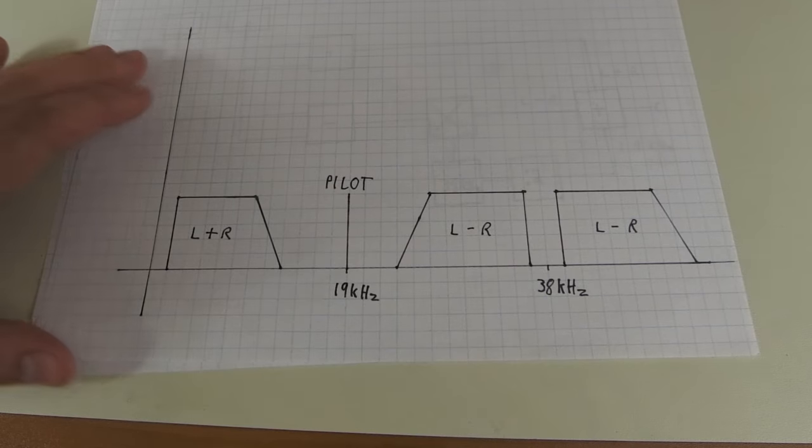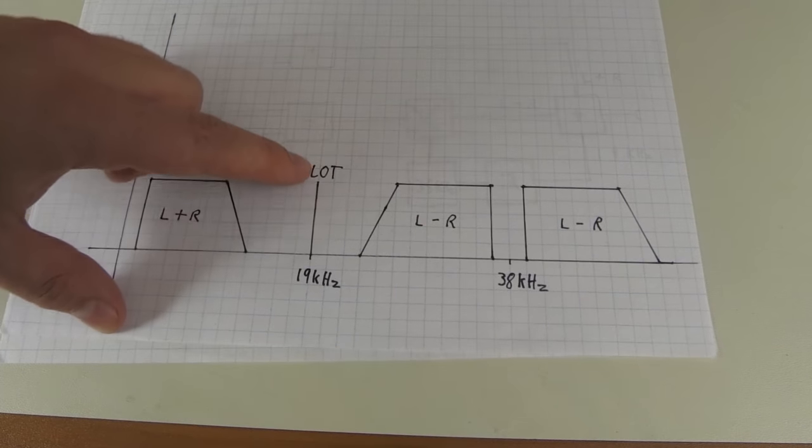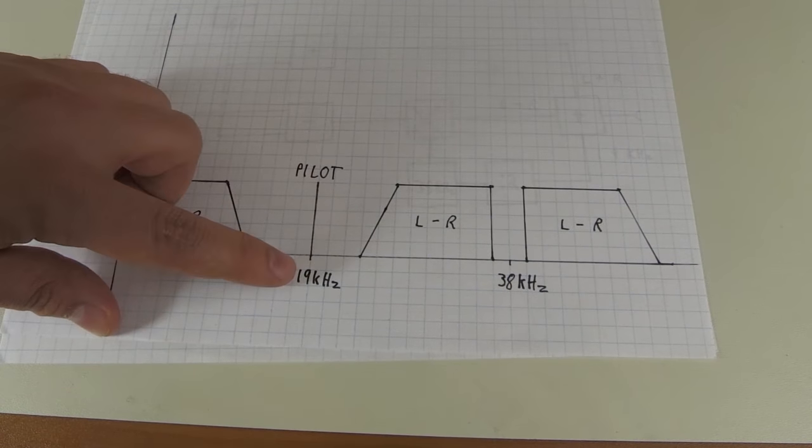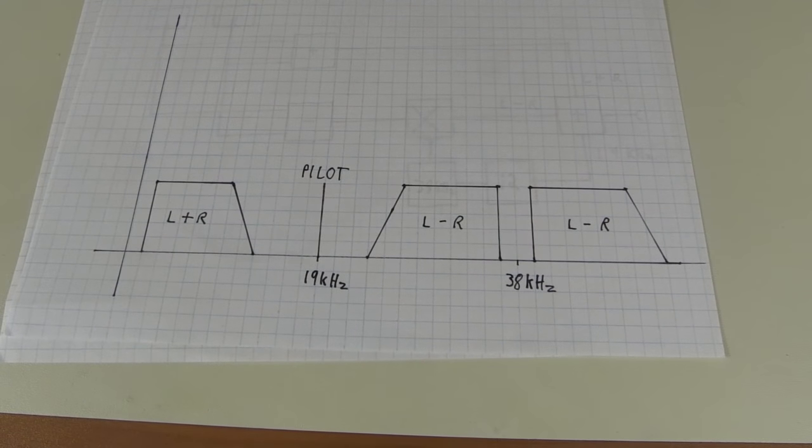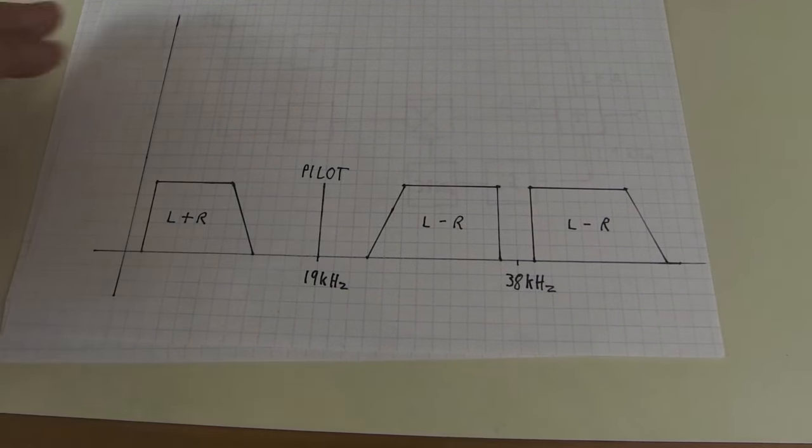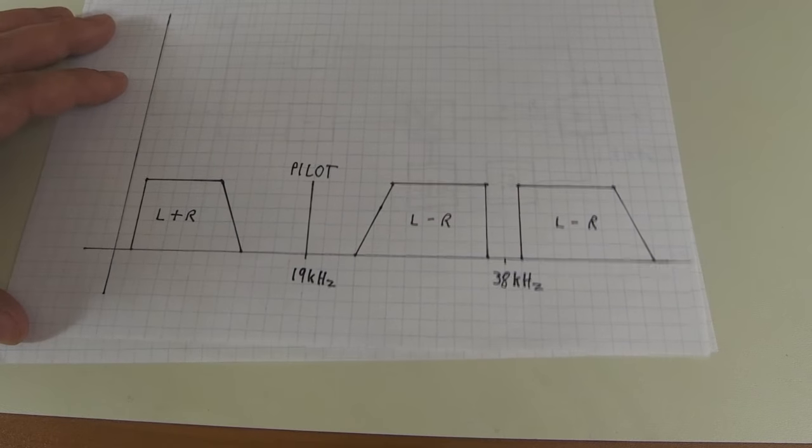Now a stereo receiver will then recognize this pilot tone right here at 19 kilohertz that tells it that there is a stereo signal and that there is stereo information present.